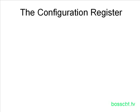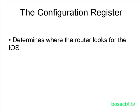That's what this tutorial is going to focus on. The configuration register is a value, and it's important to the boot sequence because it determines where the router will look for the IOS. The router has a few different choices in terms of places to look, and the configuration register — depending on how it's set — will tell it where to look first, where to look second, and how to behave.